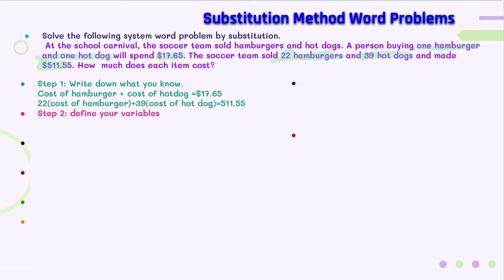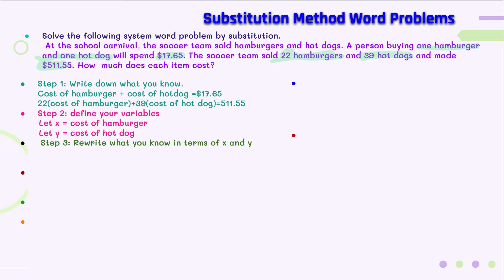Step two is to define your variables. Let X equal the cost of a hamburger, and let Y equal the cost of a hot dog. You can use any variables — I use X and Y, but you could use H for hamburger or D for dog, anything that makes sense to you. Step three is to rewrite what you know in terms of your variables: X plus Y equals $17.65, and 22X plus 39Y equals $511.55.